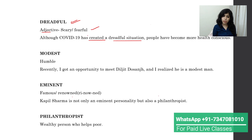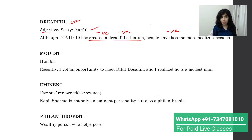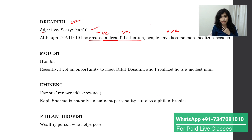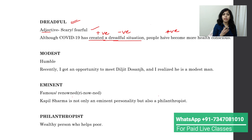In the 'although' sentence structure, we use a positive-negative or positive-less-positive pattern. 'Although COVID-19 has created a dreadful situation' is the negative part, and 'people have become more health conscious' is the positive part. So dreadful means scary or fearful, and you can use it like this.